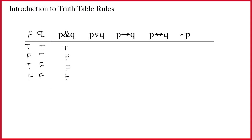The OR is just as intuitive as long as we remember that the wedge is inclusive — it means at least one part of me is true. So if both parts are true, it's true. If both are false, the entire sentence will be false. Notice the nice symmetry: with the ampersand, it's only true if they're both true; and with the wedge, it's only false if they're both false.